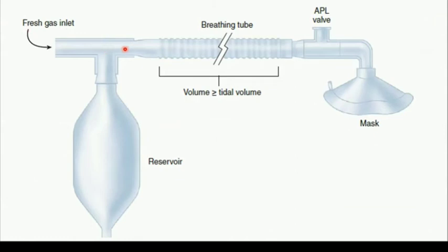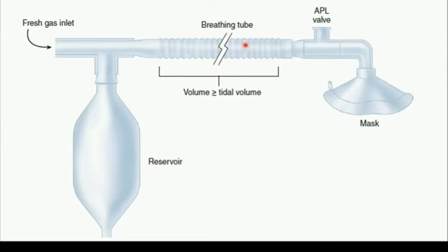Fresh gas enters through the inlet and the patient takes up the anesthetic gases. The patient exhales CO2 back into the breathing system, but fresh gas is continuously coming in, so pressure builds up inside the breathing circuit. The APL valve allows this pressure to be relieved.